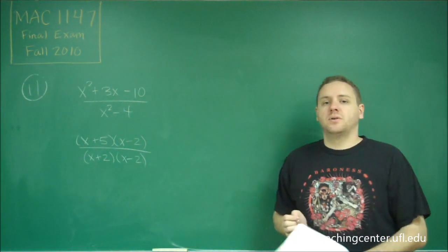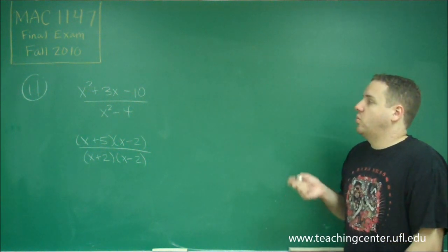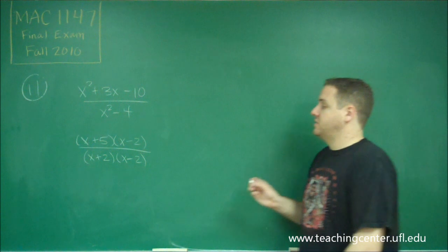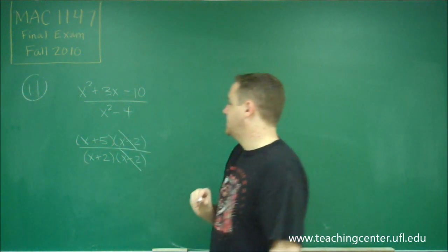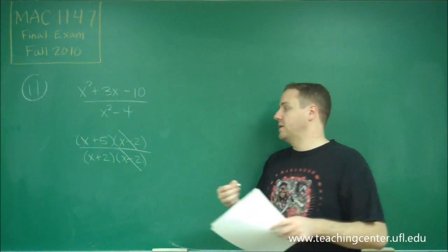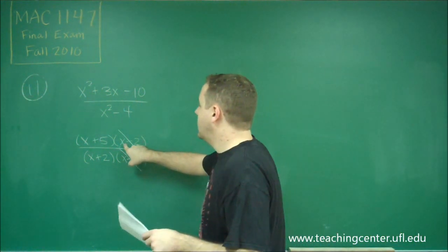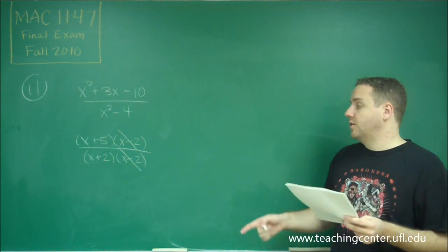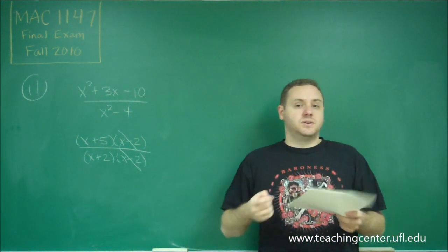So if you want to find the zeros, we want to find where the numerator equals zero. Well, the one thing you want to be careful about is we can cancel out (x - 2) before we answer that question, and you need to do that before, because even though 2 would have made the top zero, since it made the bottom zero also, it's not a zero of the rational function.